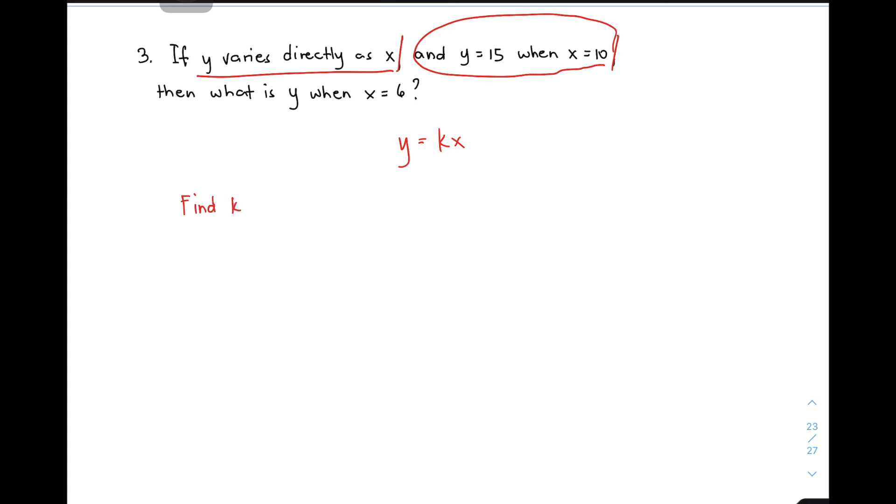Find K. Using K equals Y over X, given Y equals 15 and X equals 10, you have K equals 15 over 10. Simplifying gives 3 over 2. This is the constant of variation. Therefore, we can change this to Y equals 3 over 2 times X.